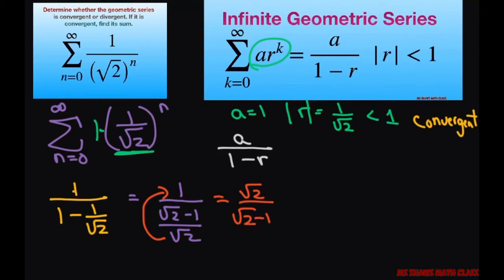Let's go ahead and rationalize the denominator so we don't have a radical in our denominator. We do this by multiplying it by square root of 2 plus 1. So we also have to multiply the numerator by square root of 2 plus 1.